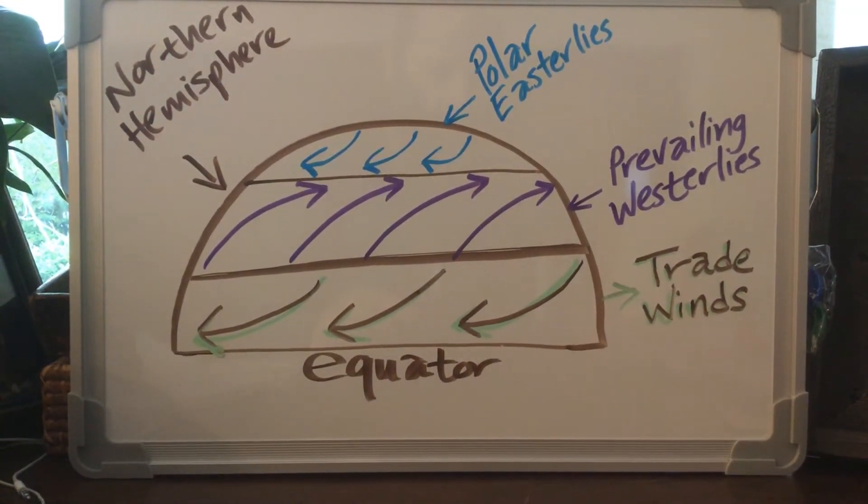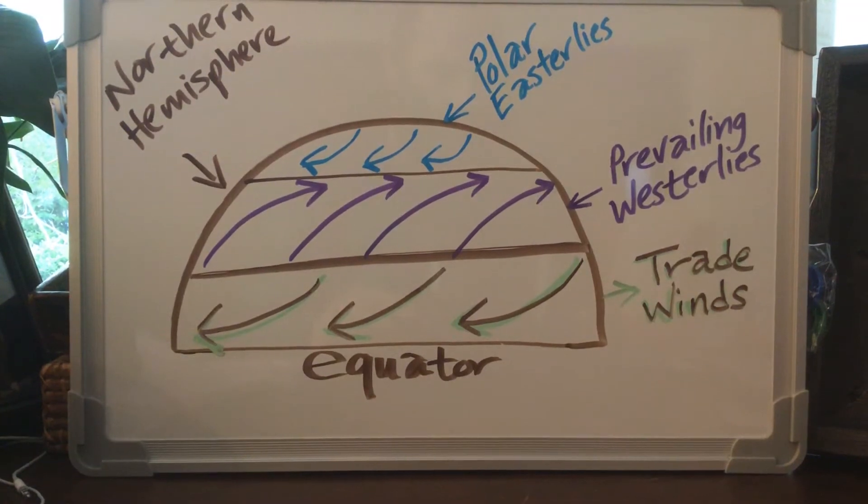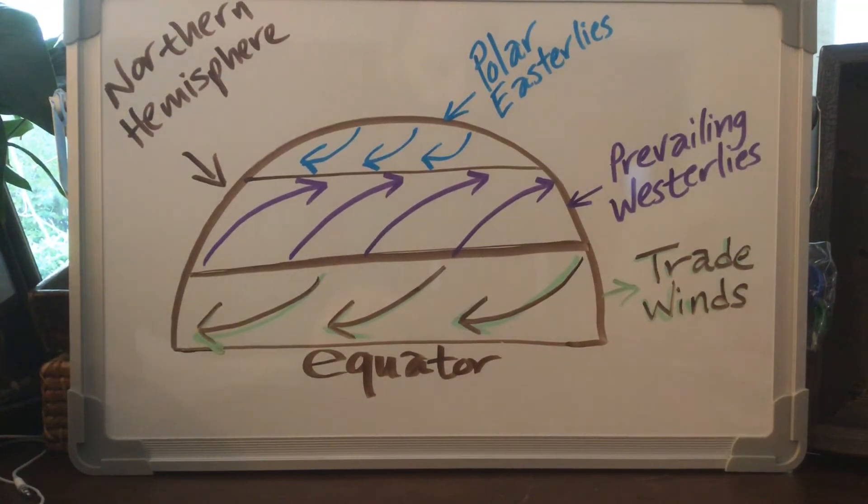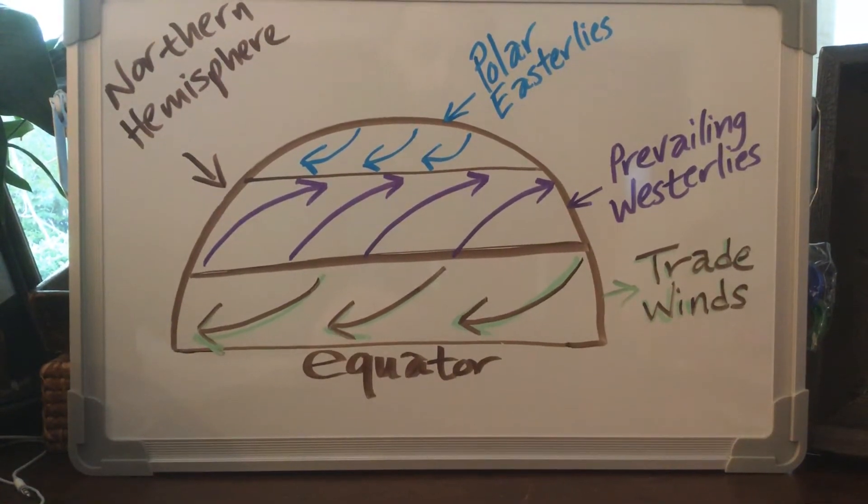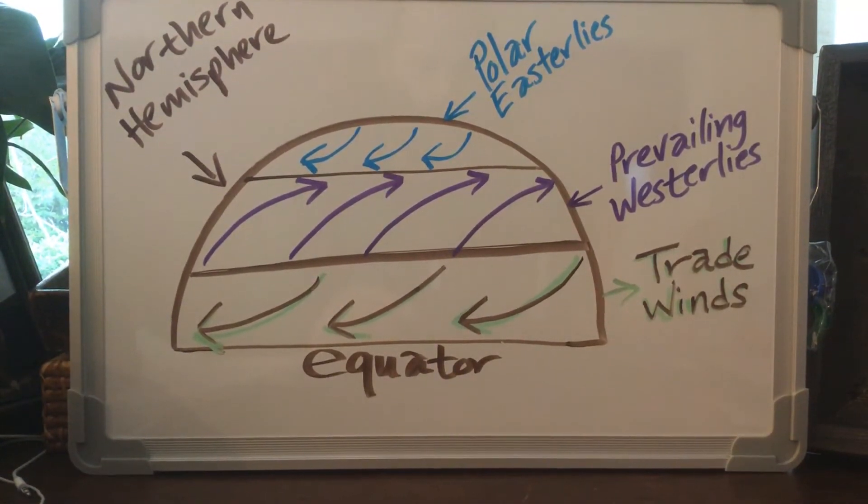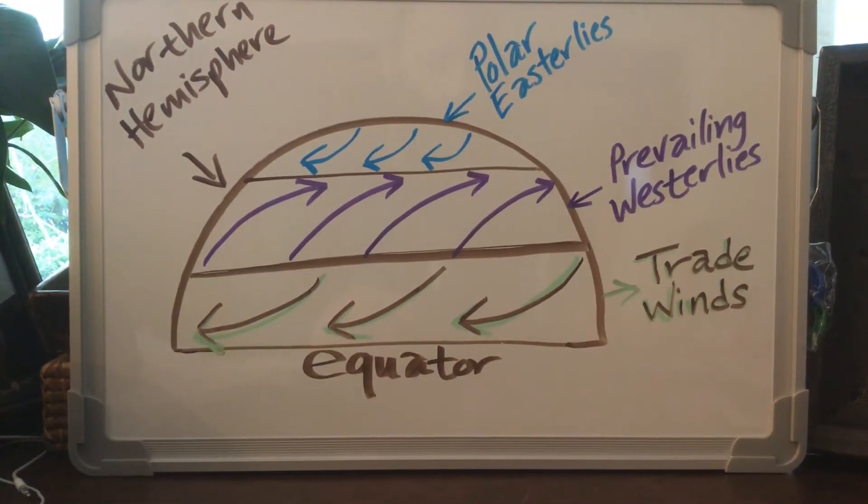So if you look at this, from the top of the world we've got the polar easterlies, the prevailing westerlies in purple, and then trade winds in the green and brown. And then at the middle line is the equator. So we're in the northern hemisphere as it denotes in the left-hand corner.